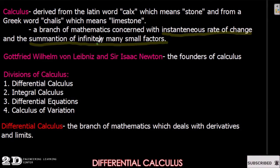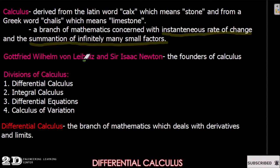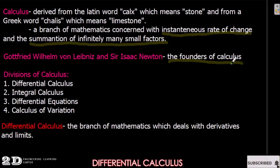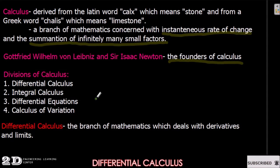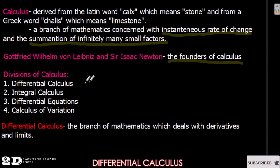Gottfried Wilhelm von Leibniz and Sir Isaac Newton are considered the founders of calculus. There is a story about this: Leibniz was the first to publish his work on calculus, but Newton was the very first to study it. Newton's only drawback was that he was late in publishing his work.